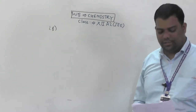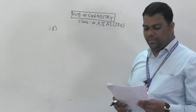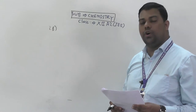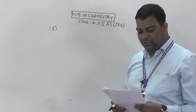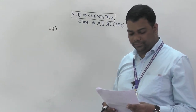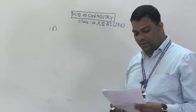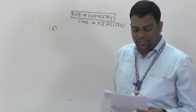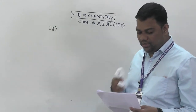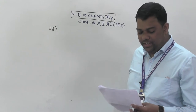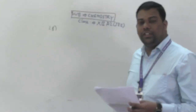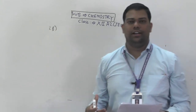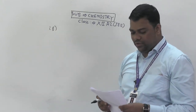Question number 28: a certain current liberated 0.504 grams of hydrogen in two hours. How many grams of copper can be liberated by the same current flowing for the same time in a copper sulfate solution? We solve this using Faraday's second law of electrolysis.